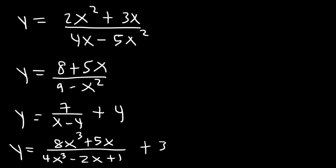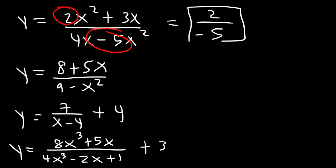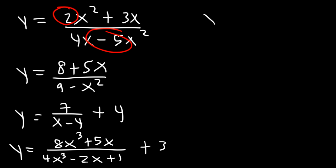Let's start with the first one. The highest degree is x squared. On top we have a coefficient of 2, and on the bottom negative 5 — both are x squared terms. So it's going to be 2 over negative 5, which gives a horizontal asymptote of y is equal to negative 2 over 5.